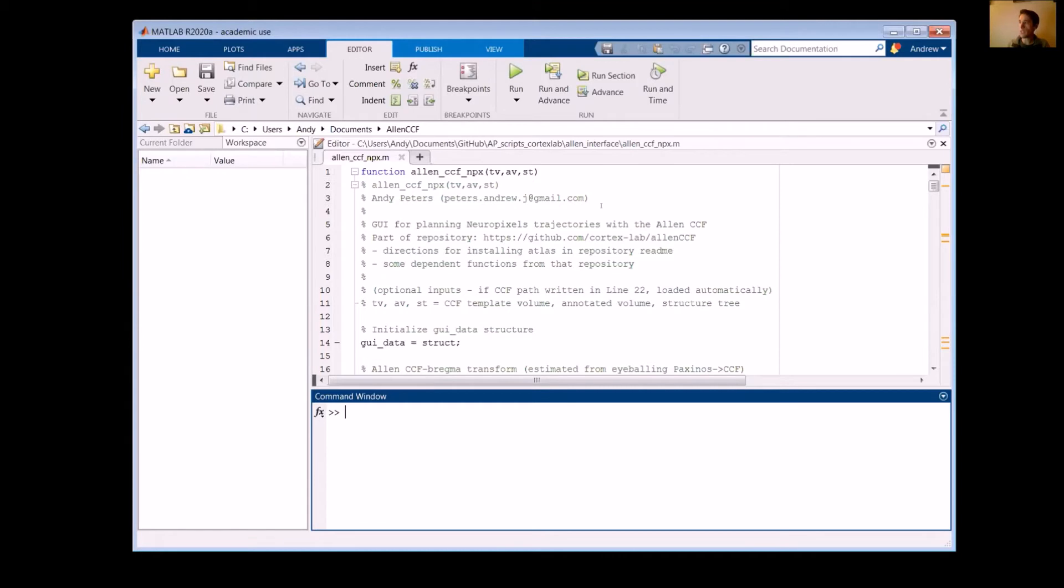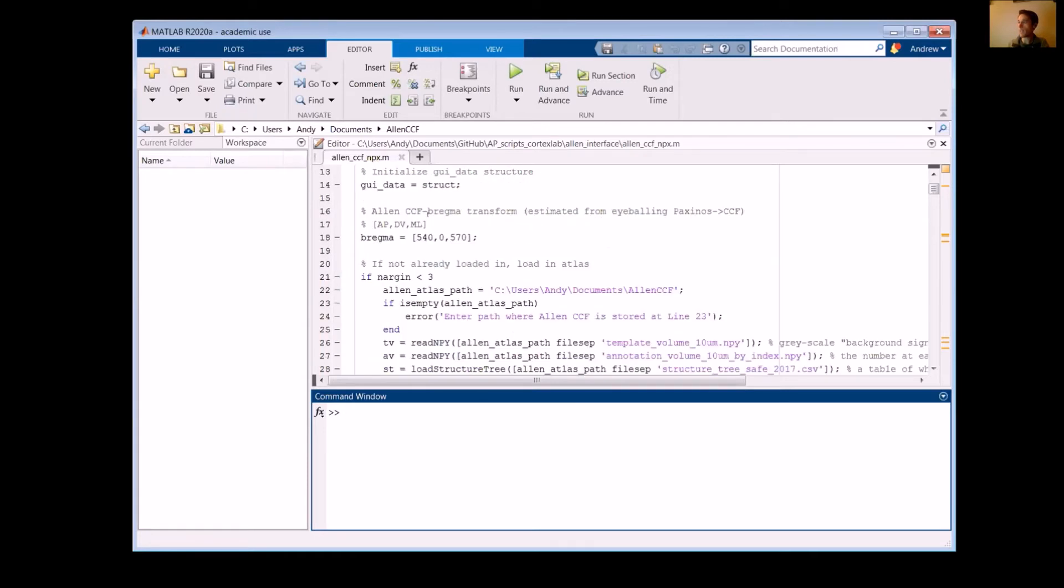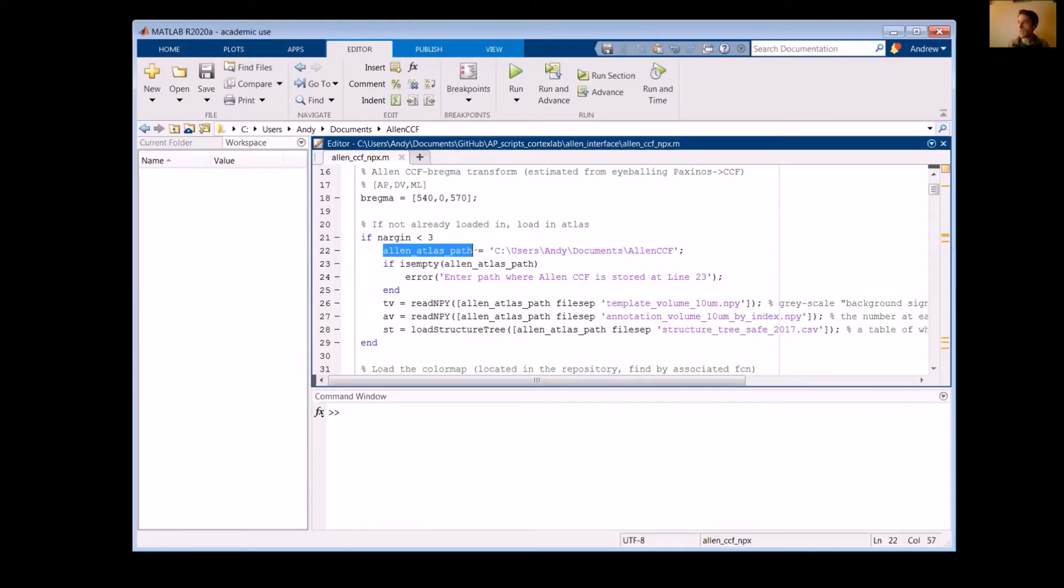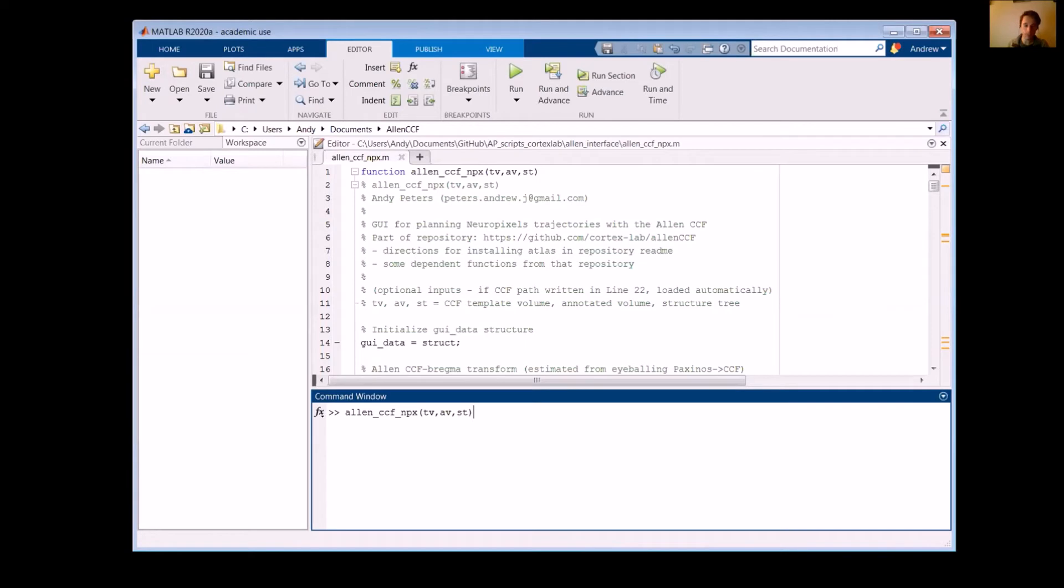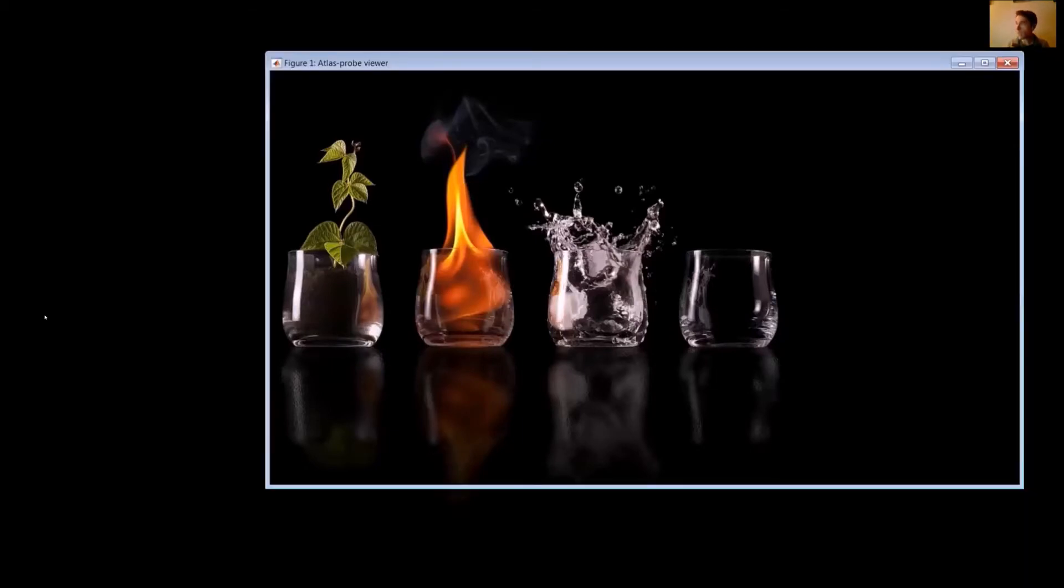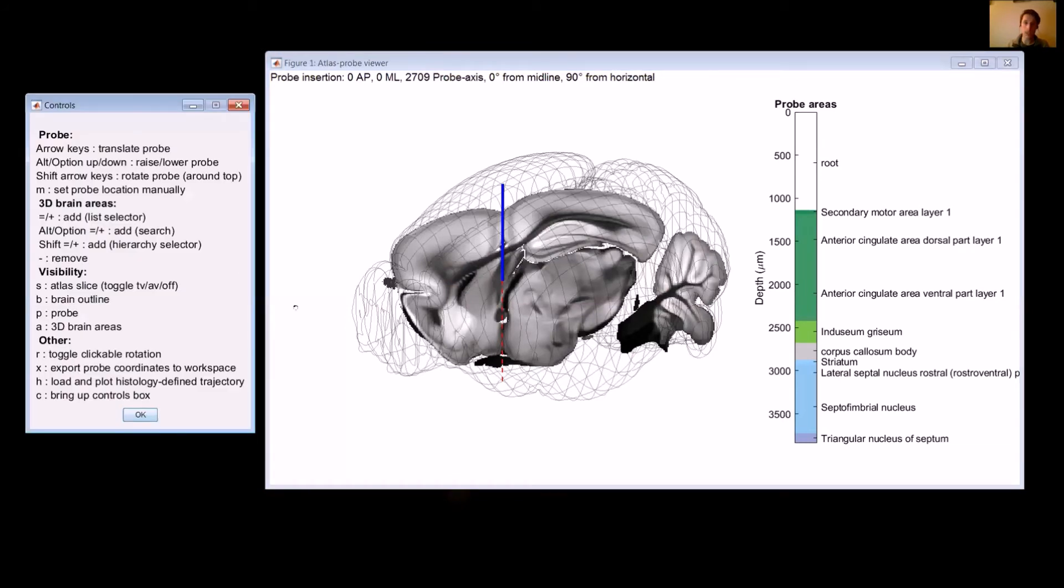The first thing you'll need to do is direct this function to where you keep your Allen CCF atlas. So this is the function that we're going to call, Allen CCF NPX. And the line that you're going to want to fill in is this line 22 here. So this is the path at which you have your Allen Atlas. It should be blank, I think, normally, but you want to put your stuff in here. So you can either put this here so that you can just run this command as is, or you can load in these things ahead of time. And then you can run it like this, so that it'll have the Allen Atlas already loaded in, and then it'll pull that when you run the GUI. So when you run that, the GUI that comes up looks like this. I'll just take you through essentially each one of these steps, and I'll show you what this looks like.